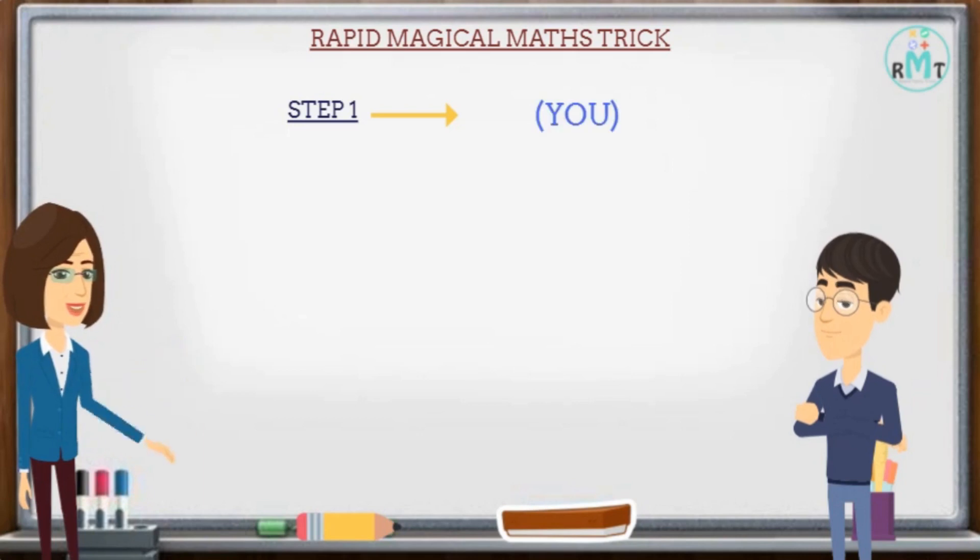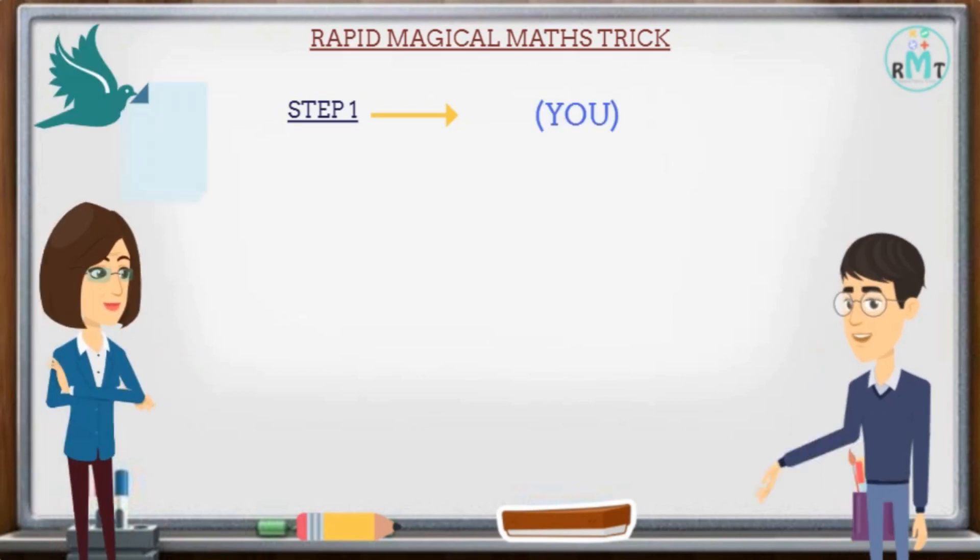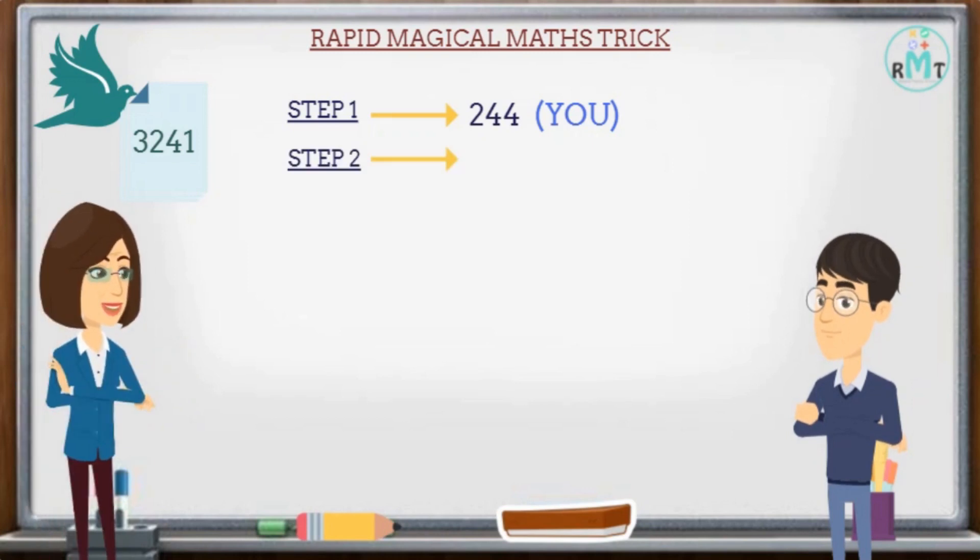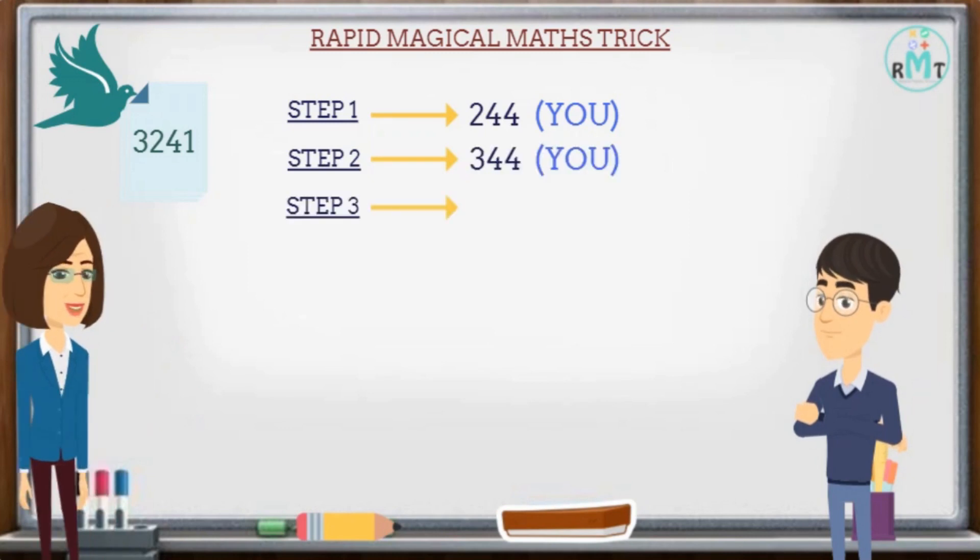Tell me a three-digit number. 244. Now your answer is 3241. Step two, again tell me another number. 344. Step three, now I will write one three-digit number, that